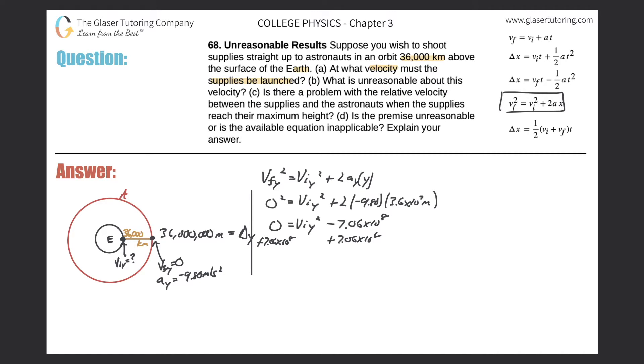All right, now the problem winds up being, so 7.06 times 10 to the 8 will equal the initial velocity in the y direction squared. Simply take the square root to find just the initial velocity in the y. Remember, anytime you take the square root of something you get a positive and negative answer. So therefore square root of 7.06 times 10 to the 8, and we get a value of 2.66 times 10 to the 4 meters per second.